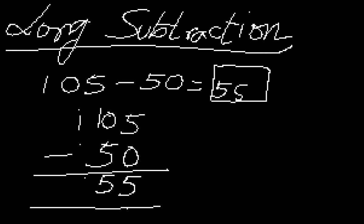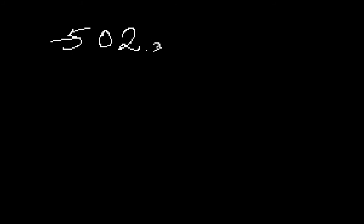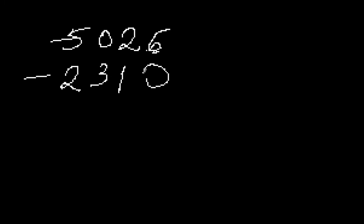We can now do another example. Let's take 5026 minus 2310. Let's see what the long subtraction result comes out to. So 6 minus 0, we get 6. In the second position, we have 2 minus 1, we get 1.